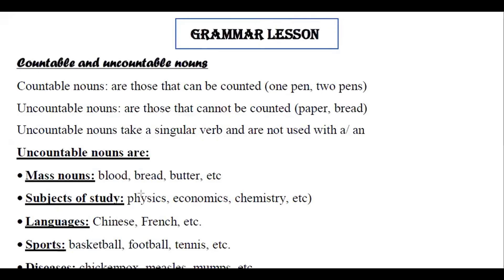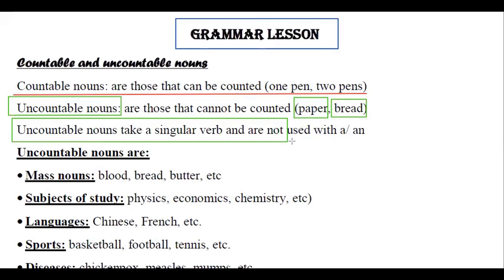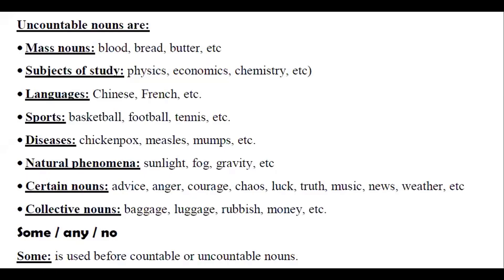Grammar lesson: countable and uncountable nouns. Countable nouns are those nouns that can be counted. We can say one pen, two pens, three pens. For uncountable nouns, those are nouns that cannot be counted. We say 'some paper', 'some bread'. Uncountable nouns take a singular verb and are not used with 'a' or 'an'.